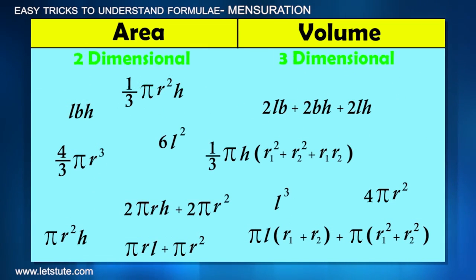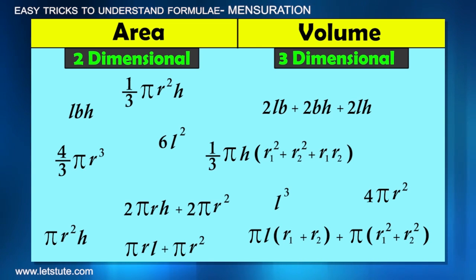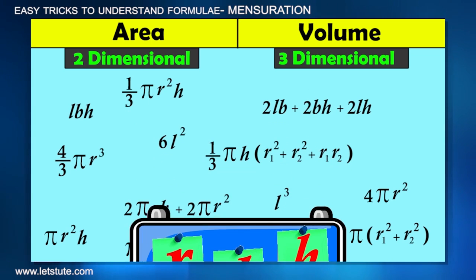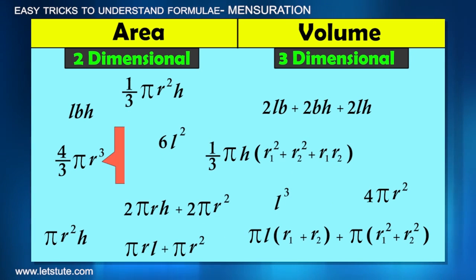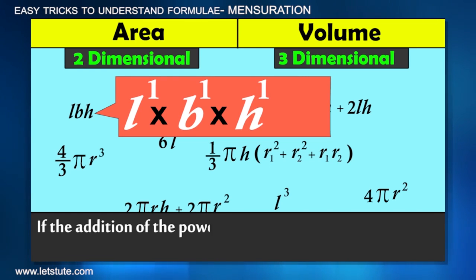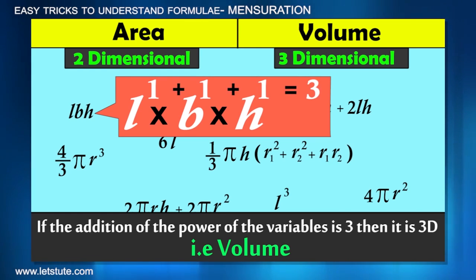As you can see here, all the formulas have variables r, L, h - all these alphabets are basically variables. The formula that has one variable with degree 3 like 4/3πr³, or different variables with powers that when added give 3, for example LBH: the power of L is 1, the power of B is 1, and the power of h is also 1, and when we add them up it gives 3.